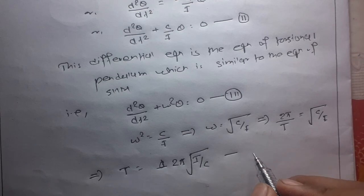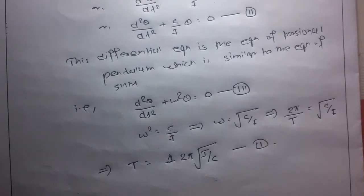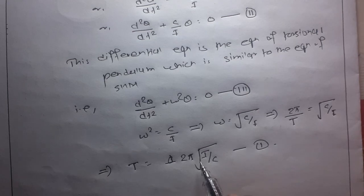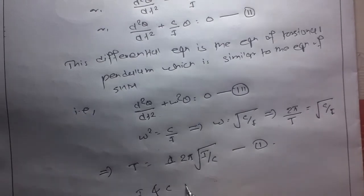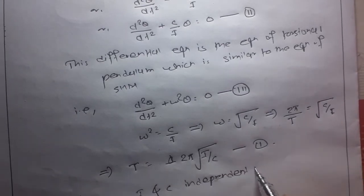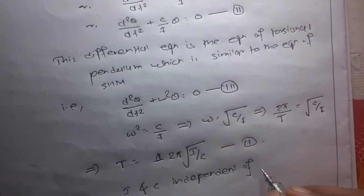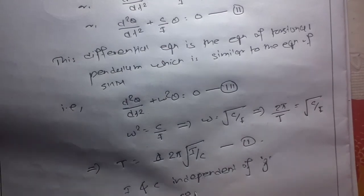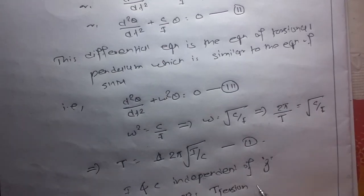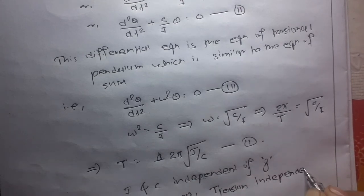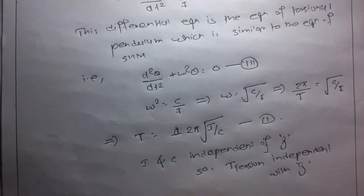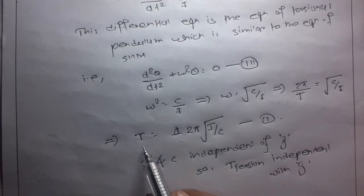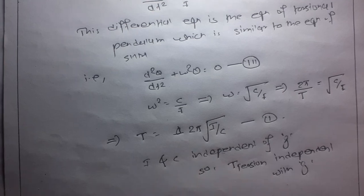The time period of the torsional pendulum depends upon the moment of inertia I and the torsional constant C. But both I and C are independent of acceleration due to gravity g. So the time period of a torsional pendulum is independent of acceleration due to gravity, unlike simple and compound pendulums which both depend on g.